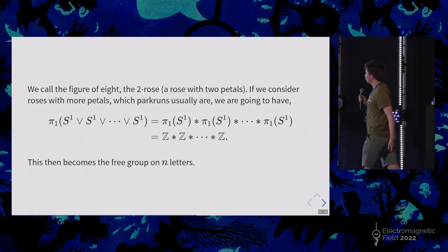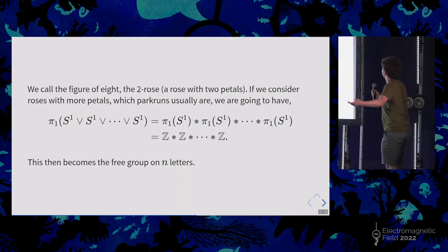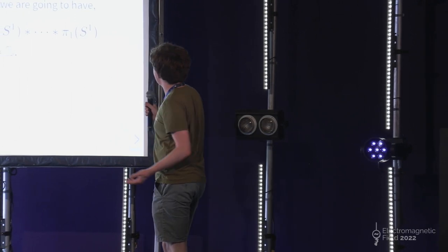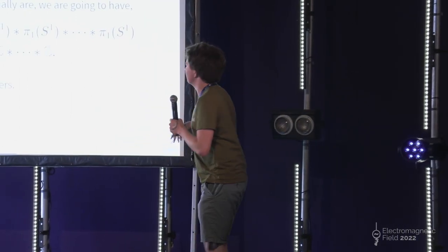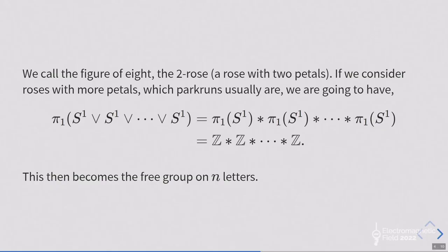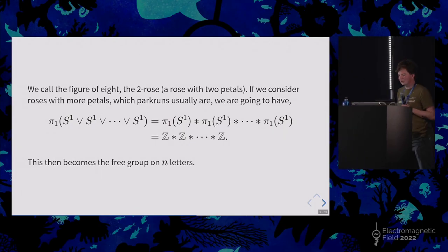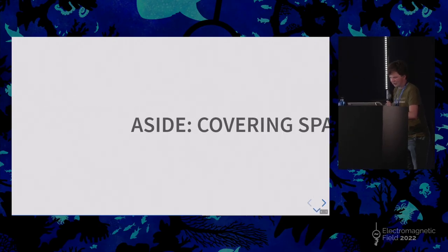Okay. So that's a figure of eight. What about, do we call it two rows? Because roses are pretty. So if we consider a rose with more petals, which parkruns usually are, we'll see in a minute, what we're going to have is something like this. So we have all these wedge sums, fancy notation, use Siefert van Kampen several times, and then we get all these kind of integers multiplied together. And this is like the free group on two letters, which we saw a minute ago for the figure of eight, but for N letters, where N is just a number. It doesn't really matter what it is. We'll use it in a minute. Great. Okay.